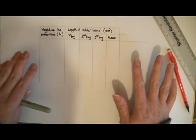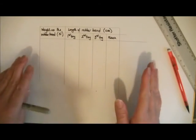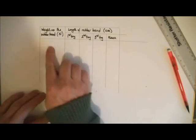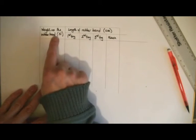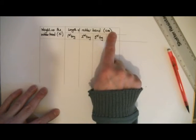Now, that's my table drawn. It's ready for me to record my measurements. And in my table here I am only going to write numbers. I don't need to put any units in here because I've already put them in the column headings.